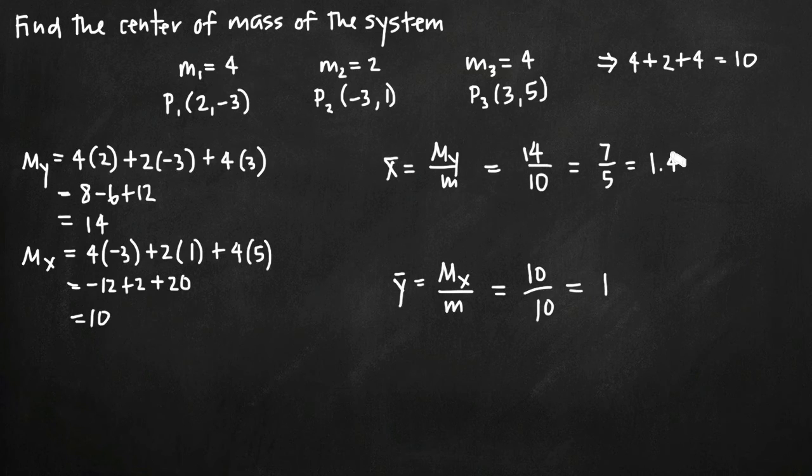And once we've found these two values, it's real easy. We're going to combine these two into a coordinate point, which is the center of mass. So center of mass, we'll just abbreviate here, is going to be equal to the x coordinate, the x value, which is 7/5, and then the y value, which is 1.